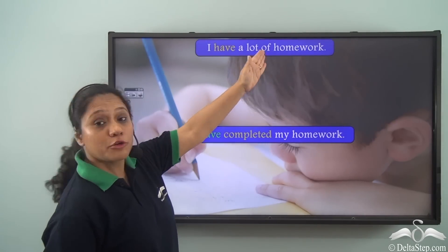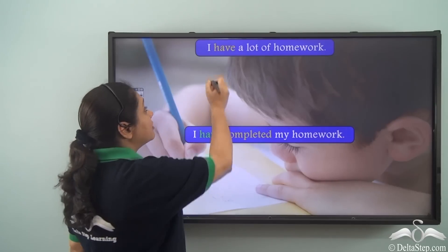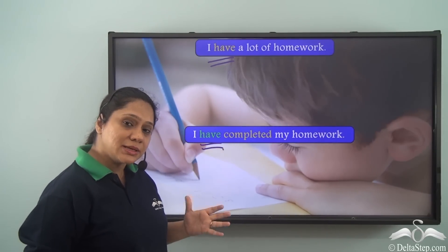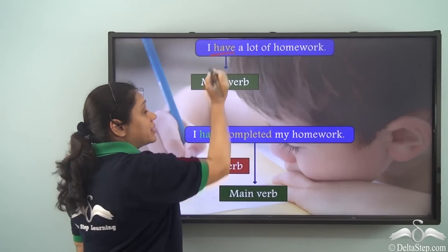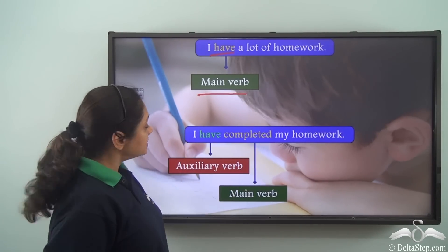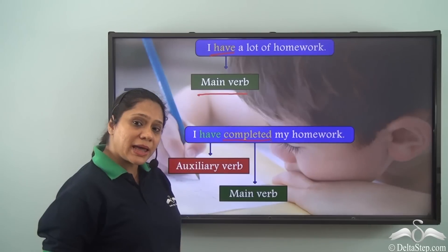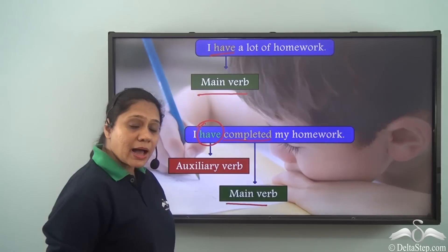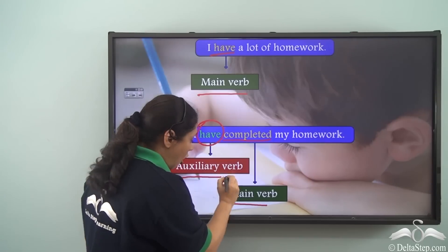Consider these two sentences: 'I have a lot of homework' and 'I have completed my homework.' In the first sentence, 'have' is showing the main action, hence it is the main verb. But in the second sentence, 'completed' is showing the main action, hence 'completed' is the main verb, and 'have' is helping us to understand the complete meaning of the main verb. Hence 'have' is an auxiliary verb here.